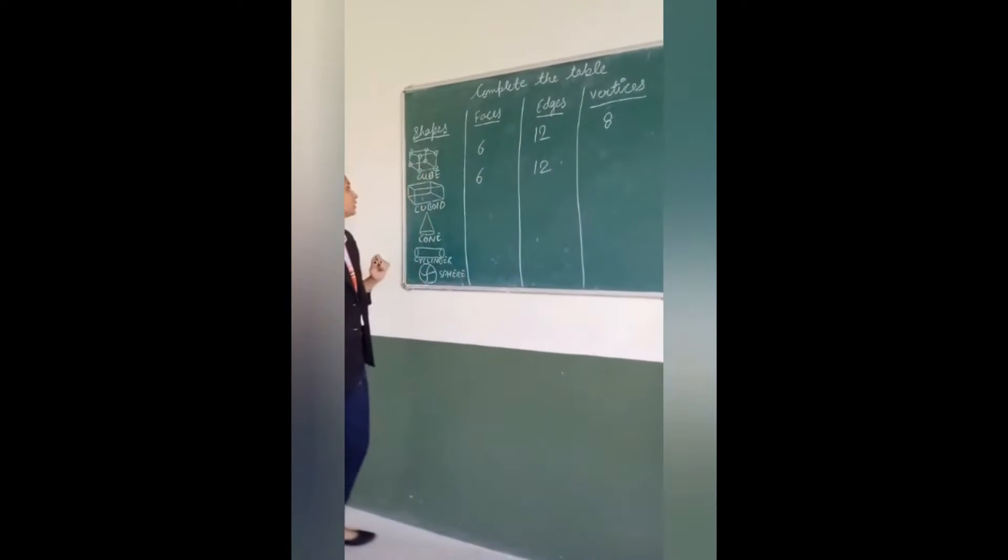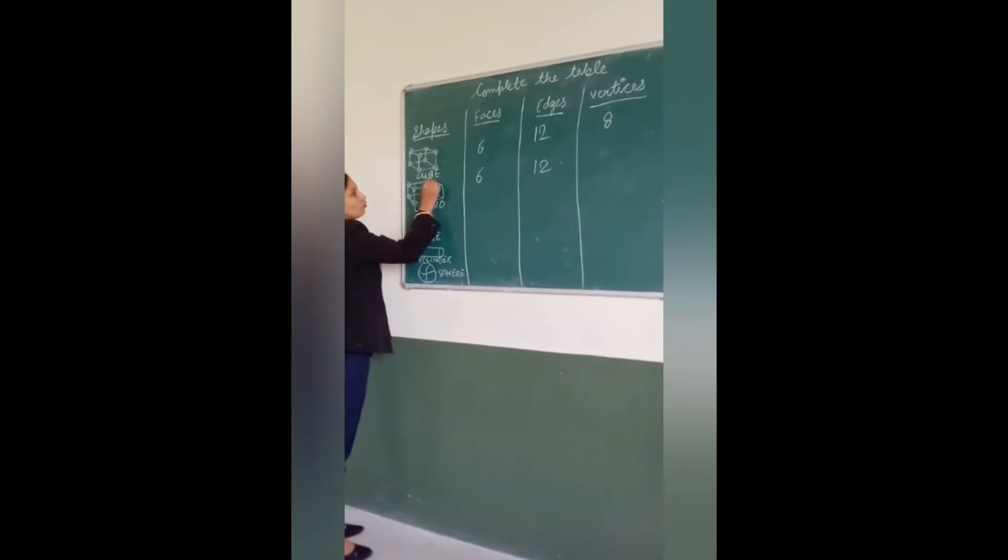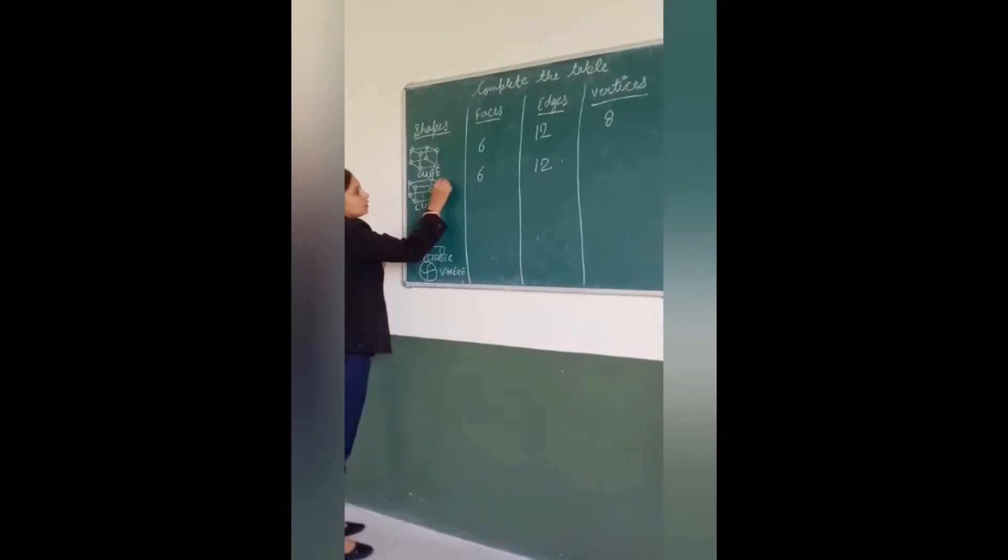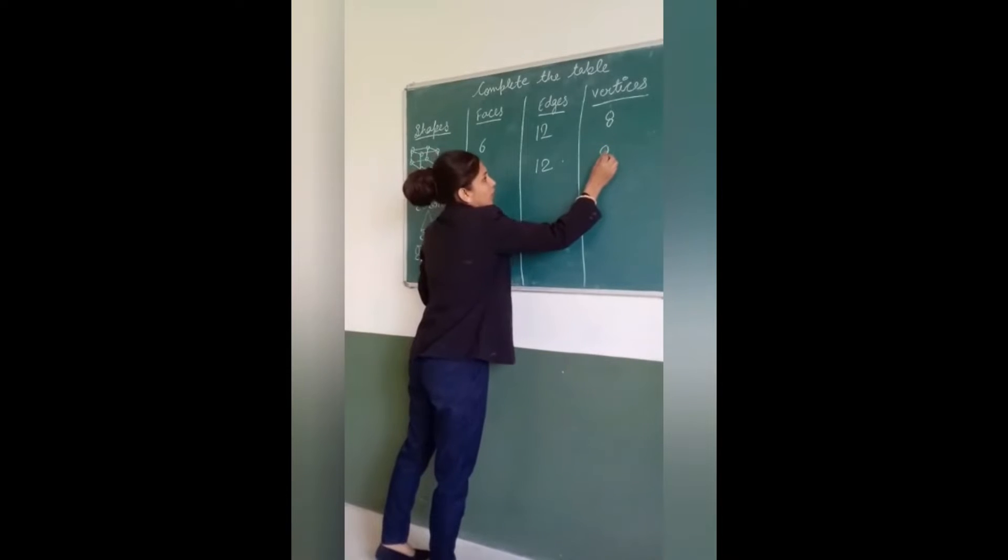How many vertices? 1, 2, 3, 4, 5, 6, 7, 8.